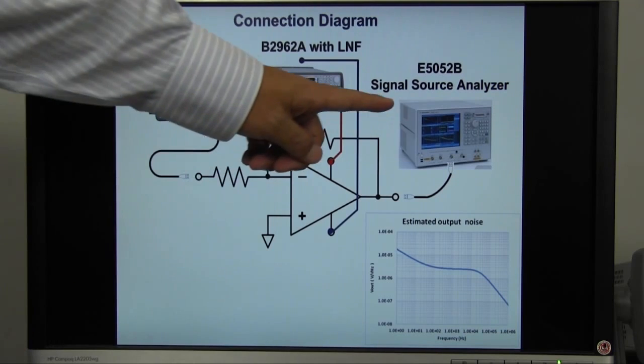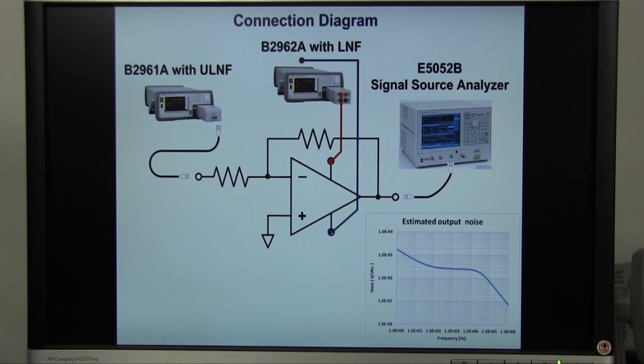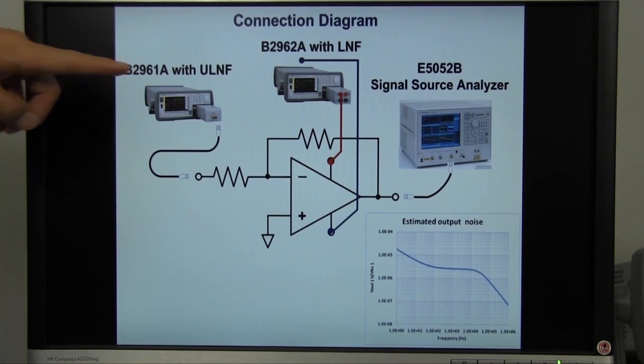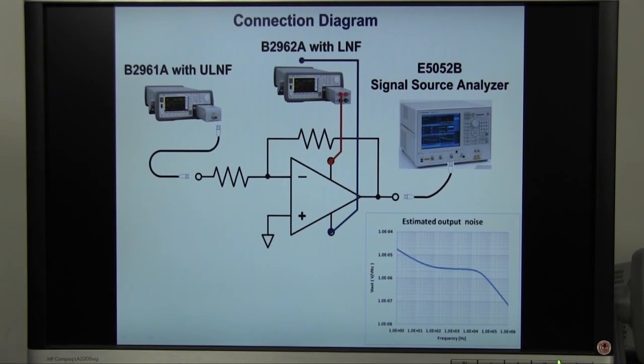This E5052B signal source analyzer is used as a spectrum analyzer. As I also measure the output noise when applying some voltage to the input, B2961A is used as a DC voltage source. The signal and the noise of the signal source would be multiplied by 100 and will come out of the output. This means that the noise of the signal source must be 100 times lower than the output noise. To meet this requirement, I'll use B2961A with ultra-low noise filter which greatly reduces the signal source noise.